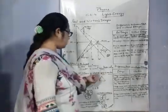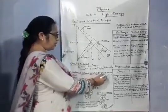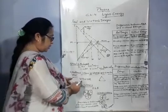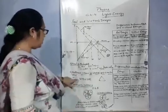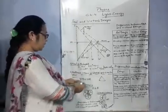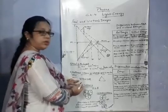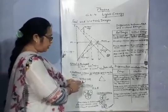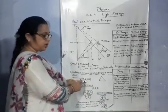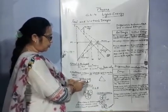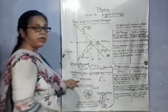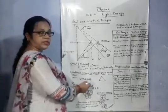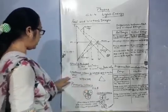Now the constituent colors of white light from the sun. White light of the sun contains 7 colors, and these colors are collectively known as VIBGYOR: V for violet, I for indigo, B for blue, G for green, Y for yellow, O for orange, and R for red. These 7 colors are present in the white light of sunlight.